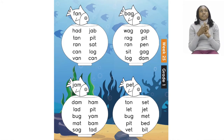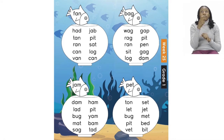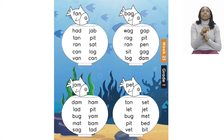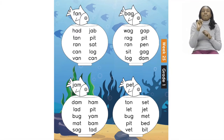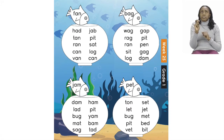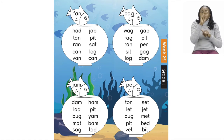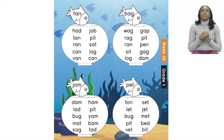We're going to do the first fish together, where it says fan. Let's begin: Had, fan. Tan, fan. Ran, fan. Can, fan. Van, fan. An, fan. Jab, fan. Pit, fan. Sat, fan. Log, fan. Can, fan.